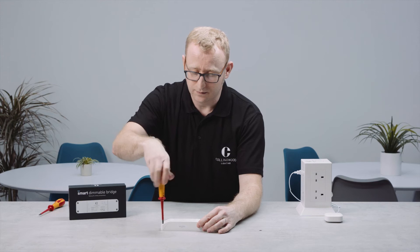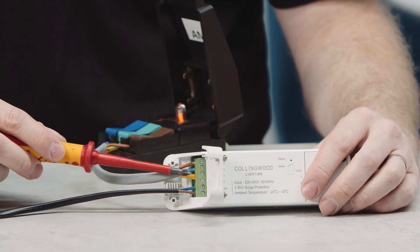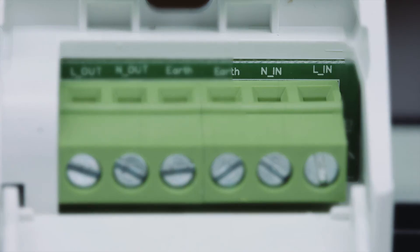This example will show when using a standard on-off light switch. Wire the mains cable into the first two terminals, labelled L-in and N-in.